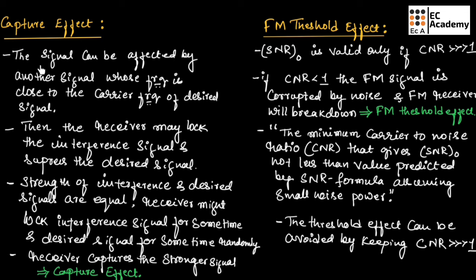In an FM system, a signal can be affected by another signal whose frequency is close to the carrier frequency of the desired signal. If you have two signals — one is the desired signal and another is the interference signal — and both signals have similar carrier frequencies, then the receiver may lock onto the interference signal and suppress the desired signal. The receiver may assume that the interference signal is the actual signal and lock it, suppressing the desired signal.